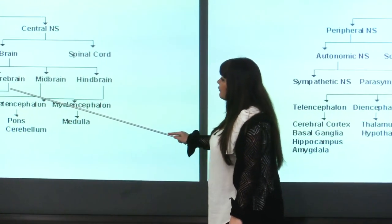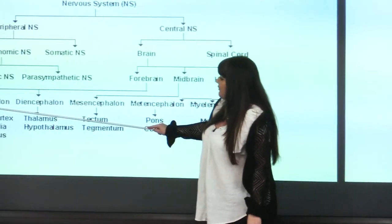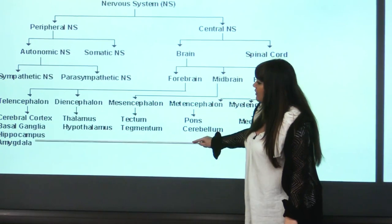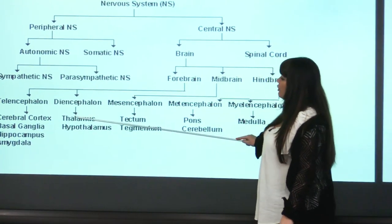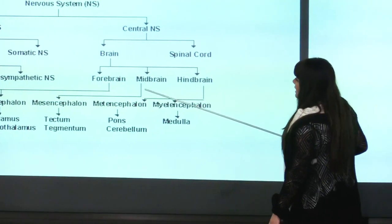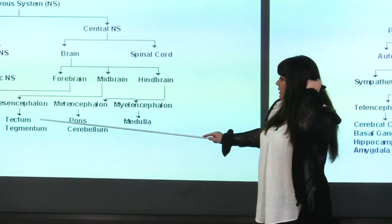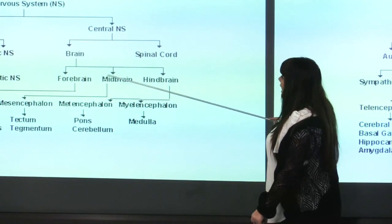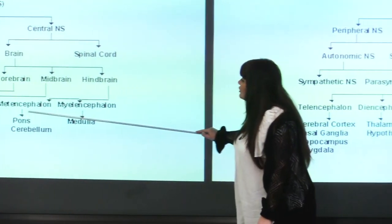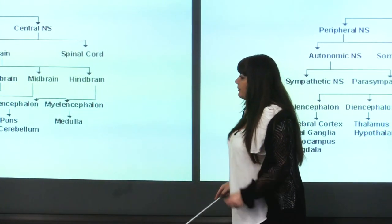If you look at the forebrain, it consists of telencephalon and diencephalon, each with various substructures. The midbrain contains the mesencephalon — a very small area under the forebrain. The hindbrain consists of the metencephalon and myelencephalon. These '-cephalon' terms are derived from the embryonic developmental stages of the brain, because these tissues originally originated from embryonic vesicles.